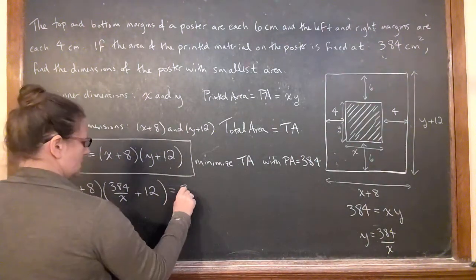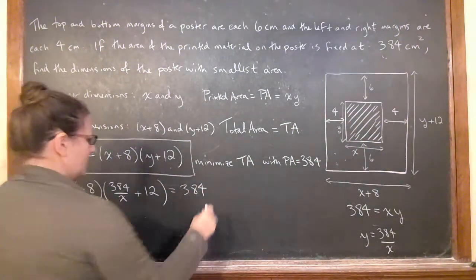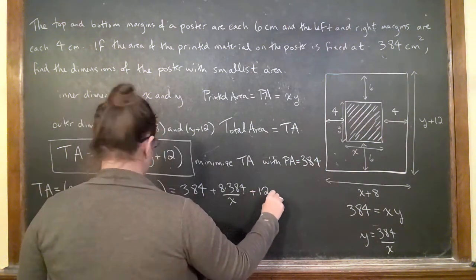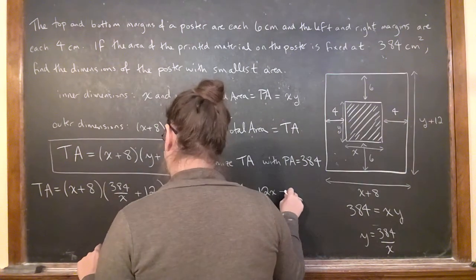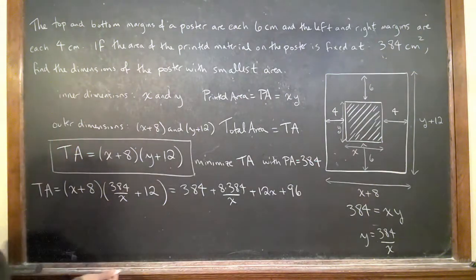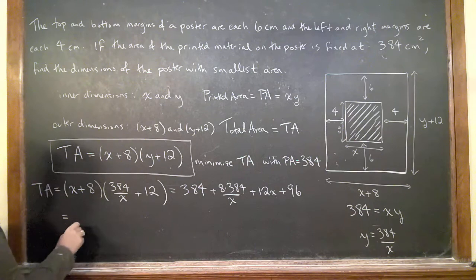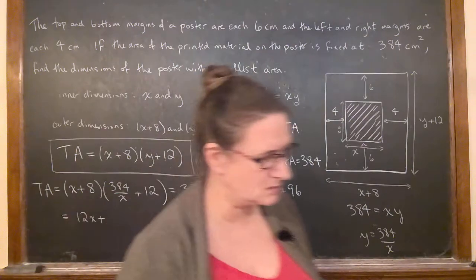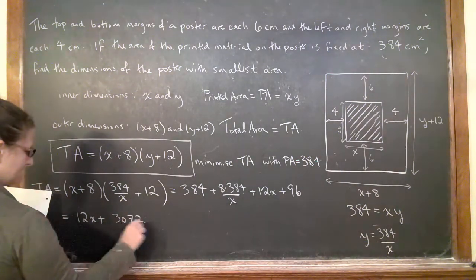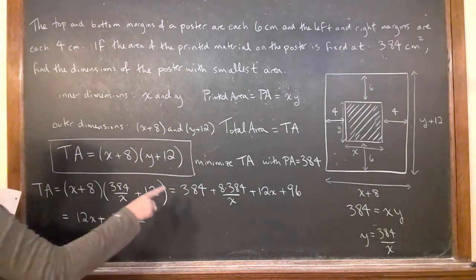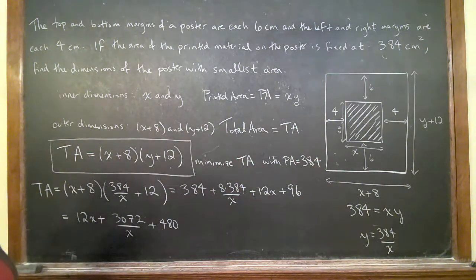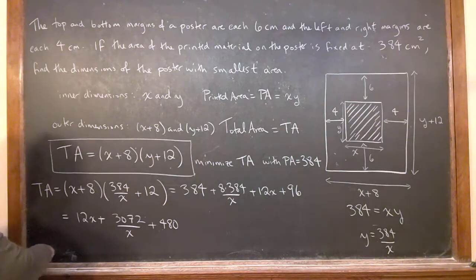So now I can expand this. I've got x plus 8 times 384 over x plus 12x plus 96. If I rewrite this, I am going to get 12x plus, 8 times 384, and then 384 plus 96 ends up being 480. So let us then take the derivative of that.